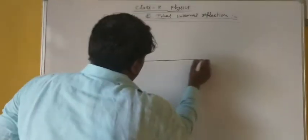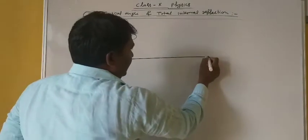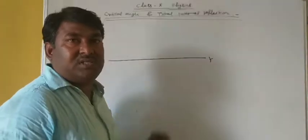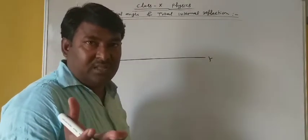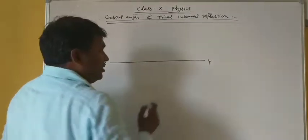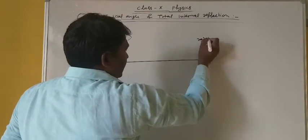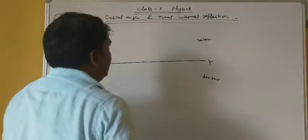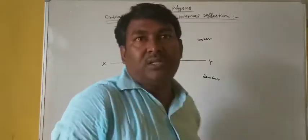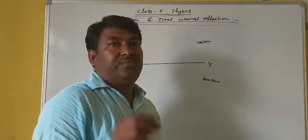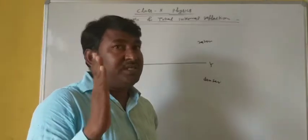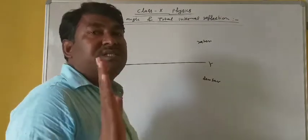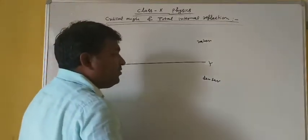As we know, if there is an interface XY — you already know what an interface is. An interface is a plane separating two different mediums. Suppose this is a rarer medium and this one is denser. In critical angle and total internal reflection, one very important thing is that your incident ray must be coming from the denser medium.